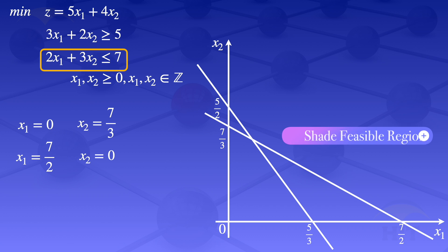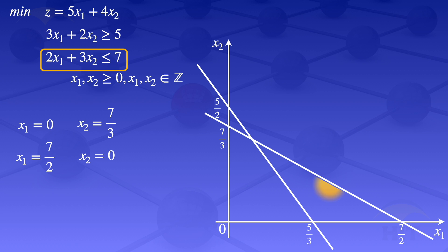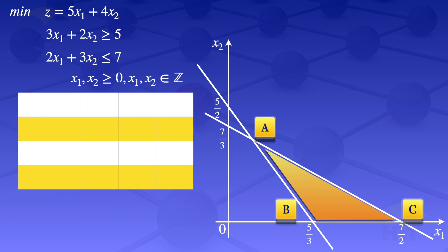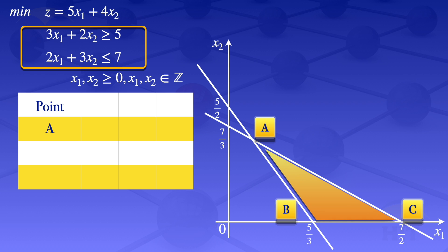I now shade the feasible region, which is the region satisfying all constraints. After shading the feasible region, I label the corner points: point A, point B, and point C. Then I evaluate the objective function at the corner points by drawing a table with columns for the points, x1, x2, and the objective function z. Point A is at the intersection of the two constraint lines.